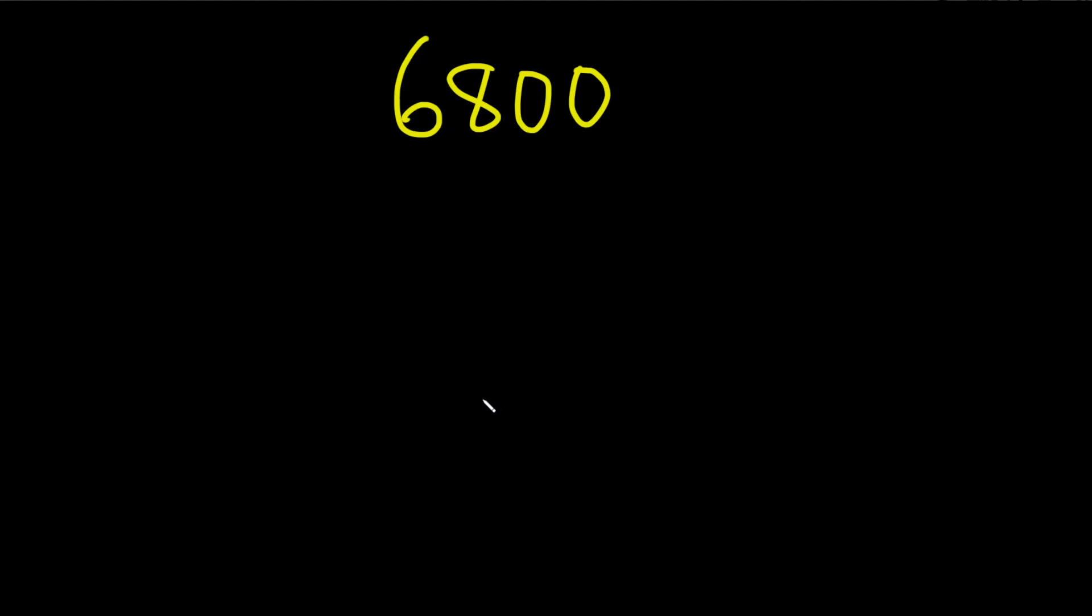Find the prime factorization of 6,800. So we're going to make a little factor tree in order to do this. For me, the obvious way to do it is to realize that this is 68 times 100. So we'll start by writing it like that. This is 68 times 100.